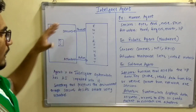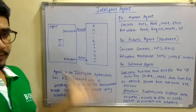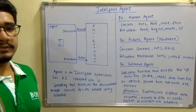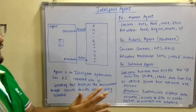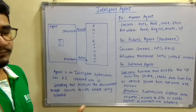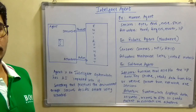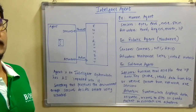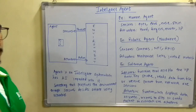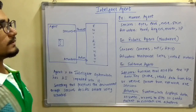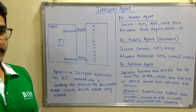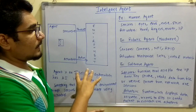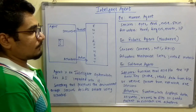Let's look at examples. First, we have the human agent — that is, the human itself. We have sensory organs which help us sense the environment: eyes, nose, skin. For actuators, depending on external conditions or the environment, we can act upon the environment with the help of our hands, fingers, mouth, lips, and so on.